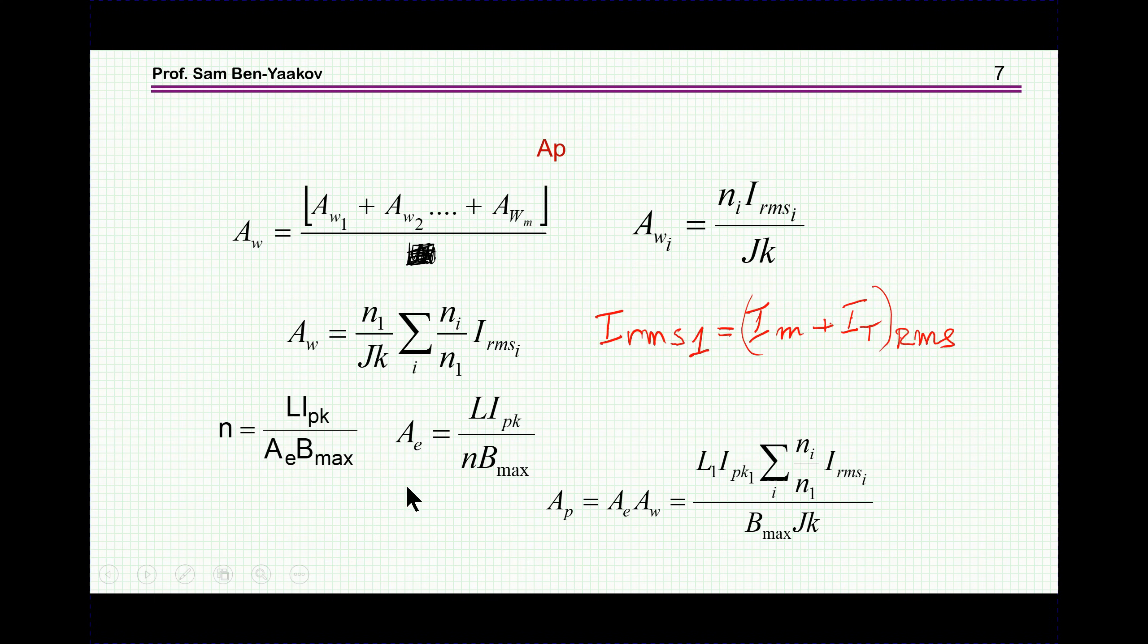Using this expression and the expression for the area of each of the windings, we can divide out the number of turns of the first winding and come up with this expression, which says that the total winding area is related to this ratio of number of turns, I_RMS of each of the windings, and J and K. We have found earlier this A_E from B_max consideration. So now we multiply these two and get an expression for the very important parameter, which is AP, which is the area product, the cross-section area times the winding area.